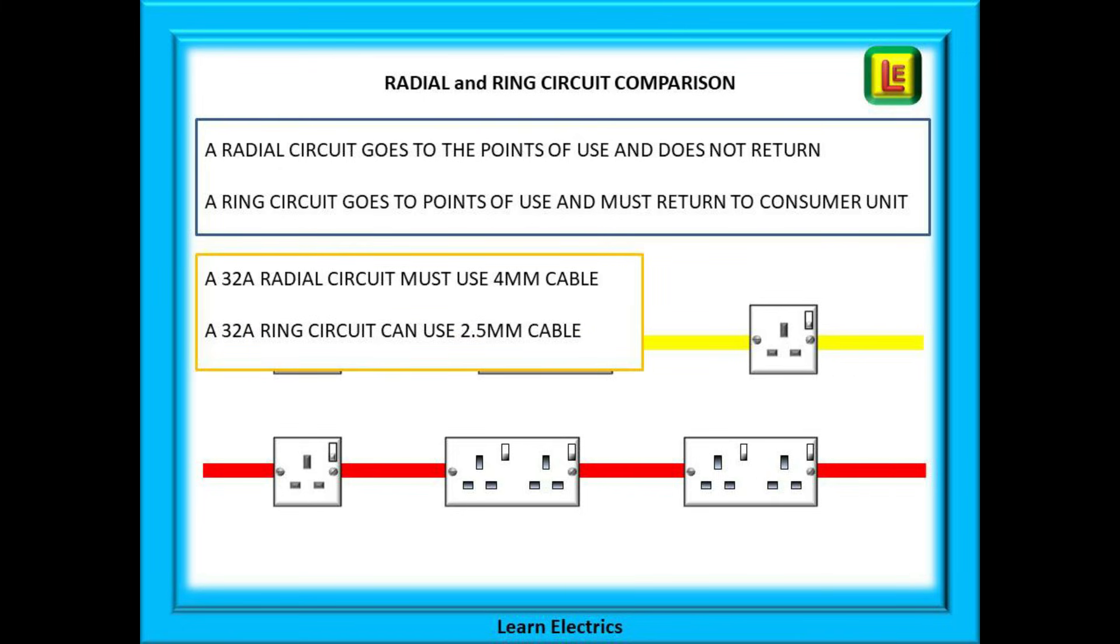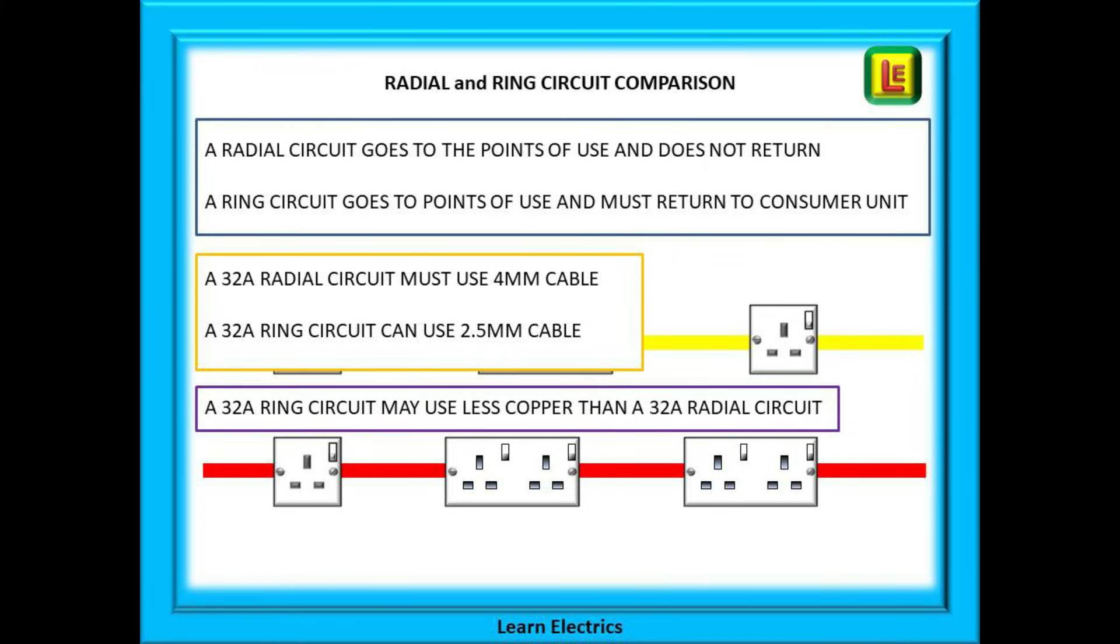A 32 amp radial circuit must use 4 mm cable. But a 32 amp ring circuit can use 2.5 mm cable. Because we can use thinner cable for a ring circuit, the ring circuit may use less copper than a radial circuit.